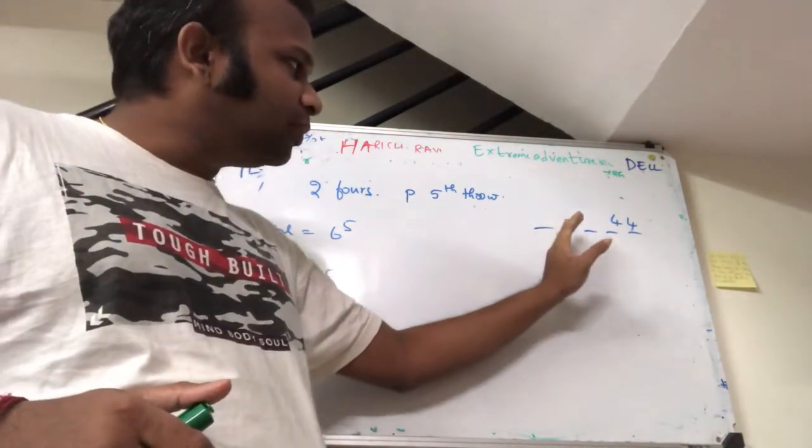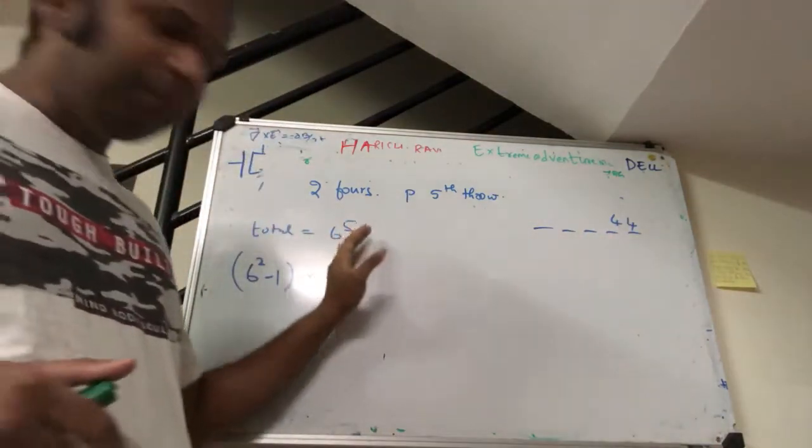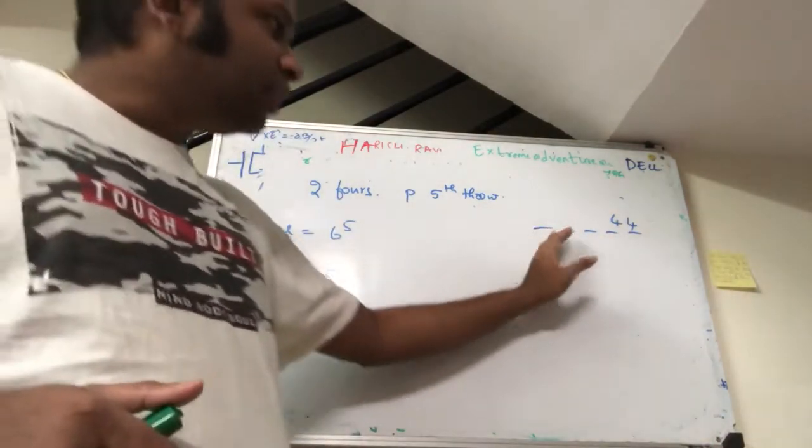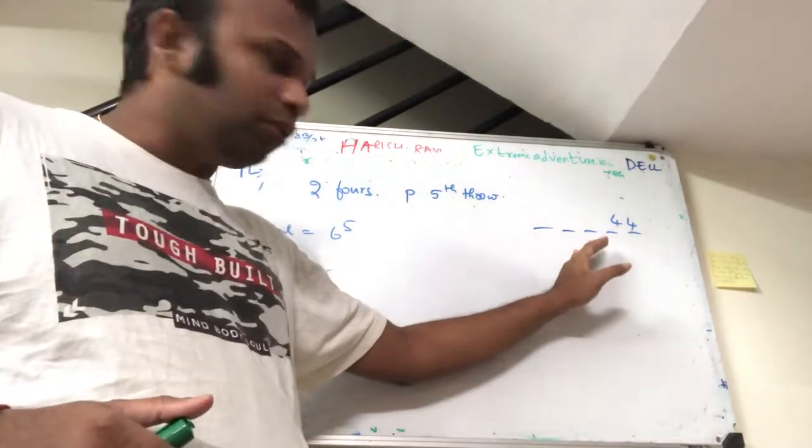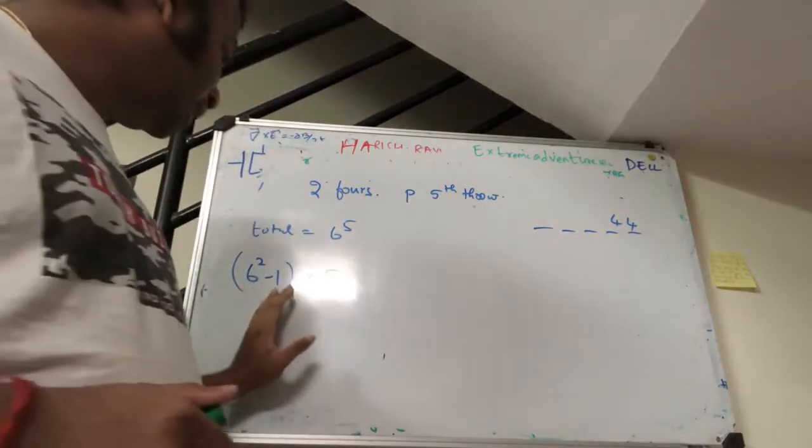So the total number of possibilities are 6 power 5. Then, the first two cannot be a multiple four. So that's 6 square minus 1, that is 35.